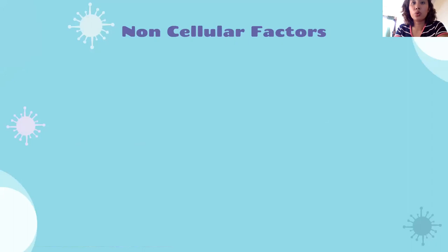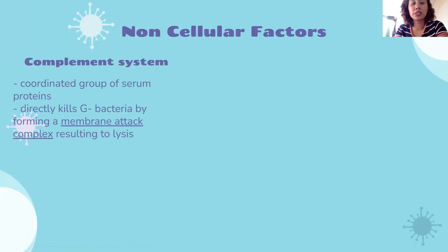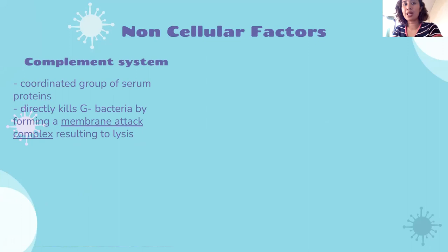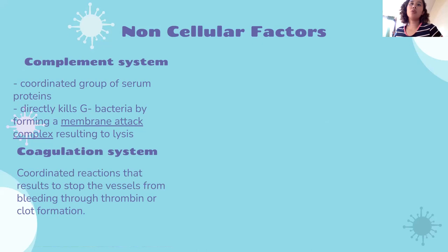Non-cellular factors are products produced by cells, or sometimes they are just proteins. The complement system is a coordinated group of serum proteins — specifically serine proteases — that can kill gram-negative bacteria by forming a membrane attack complex, resulting in lysis or breakdown of the bacteria. The coagulation system — also called the clotting system — when there is excessive bleeding due to a wound, the body activates the coagulation system to repair the injury and stop the blood vessels from bleeding. The end product is clot formation.